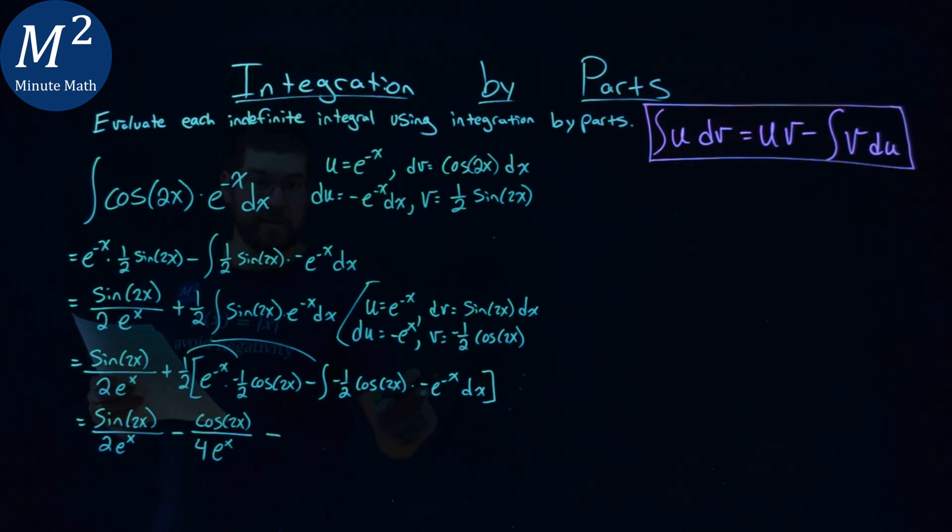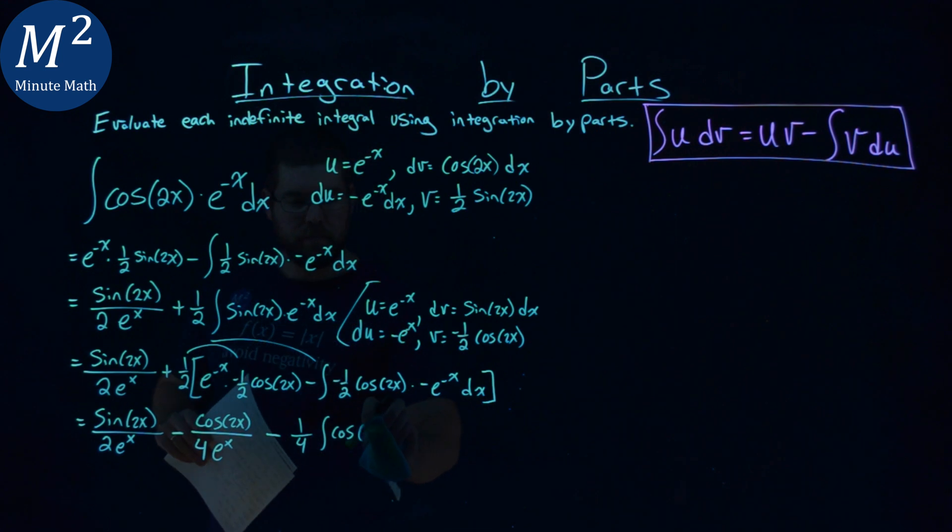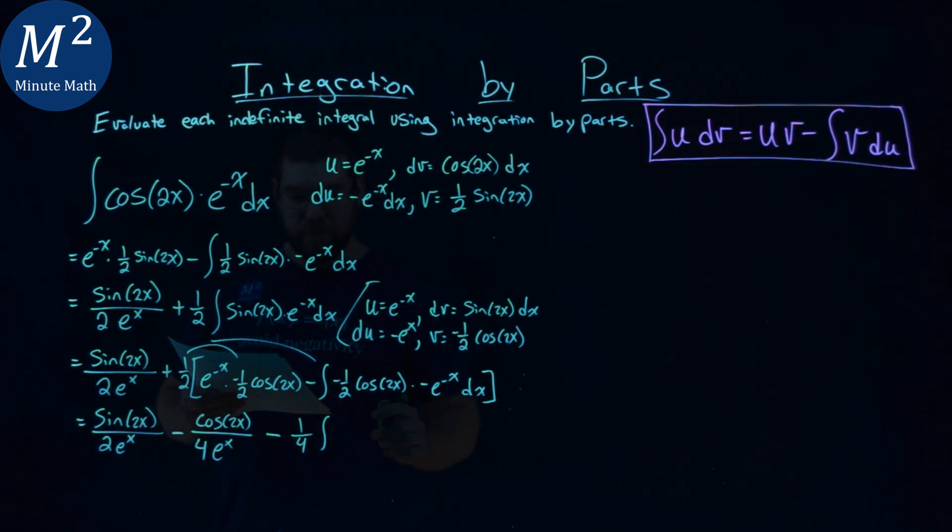So we keep the negative sign here, one-fourth, times the integral of that cosine of 2x. Times e to the negative x dx.